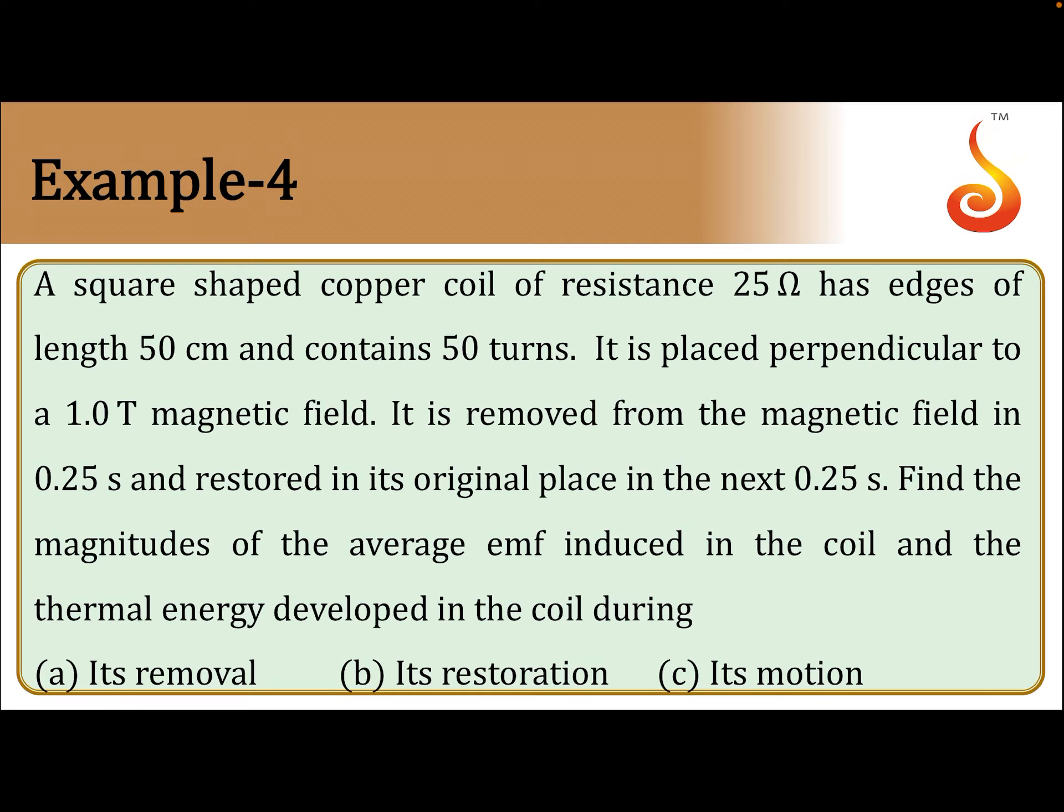Example number 4. A square shaped copper coil of resistance 25 ohm has edges of length 50 centimeter and contains 50 turns.